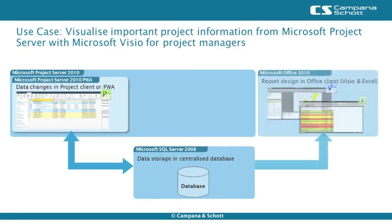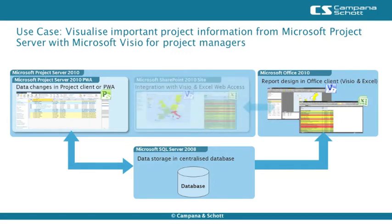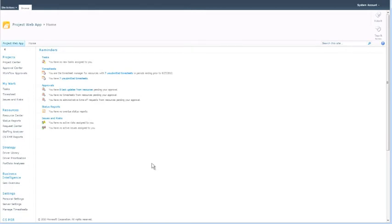Project status information from this database is connected to a map created with Microsoft Visio and a table in Microsoft Excel. By publishing both files to Microsoft SharePoint, a dashboard for Project Portfolio Managers is created and project status information can be tracked easily. The information is automatically updated based on current project data.